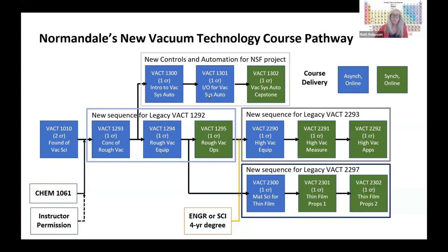This diagram also shows the former course structure, shown here in three boxes: 1292, 2293, and 2297. We have broken those legacy courses up into three parts now for a couple of main reasons. One is to allow flexibility in what path you take — for instance, here you have a choice of two courses, and you don't have to finish all three. It also gives you more flexibility in the schedule, because the green boxes indicate courses where you have live class meetings, and some students find it harder to commit to those. So we tried to offer much of the content in the blue boxes, which is asynchronous.